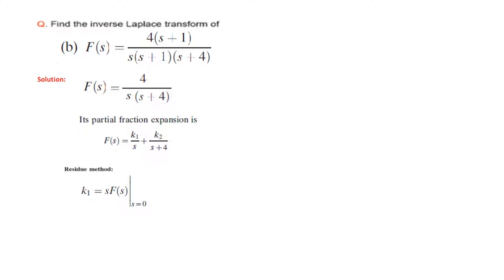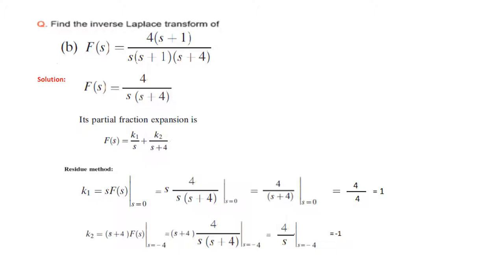Plugging in the value of f(s) and cancelling the like terms, it further simplifies to 4 divided by s plus 4. Putting the value of s equal to 0, the answer is 1. Similarly for k2, we multiply by the denominator s plus 4, so s plus 4 times f(s). Plugging in the value of f(s) and cancelling the like terms, it becomes 4 over s. Setting s plus 4 equal to 0 gives s equal to minus 4, and the answer becomes minus 1.